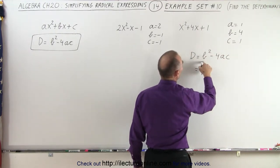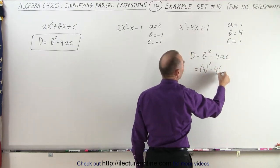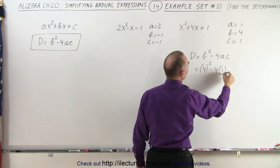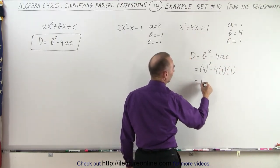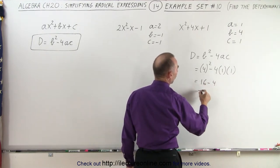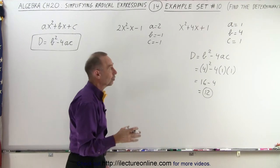So in this case b is equal to 4, so we take 4 squared minus 4 times a which is equal to 1, times c which is equal to 1. So this is equal to 16 minus 4, or 12. So that's how we find the value for the determinant.